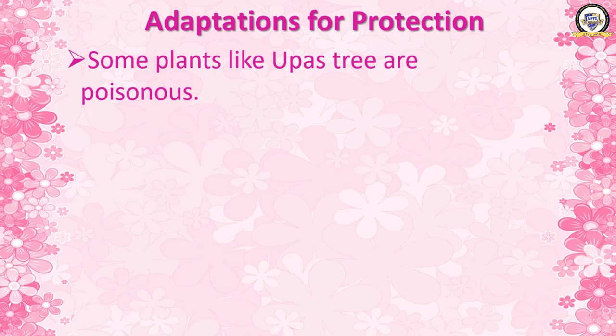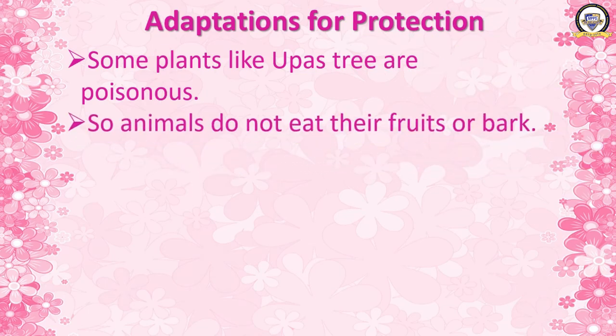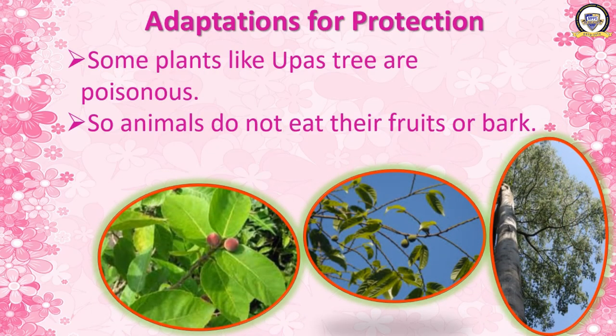Some plants like the upas tree are poisonous, so animals do not eat their fruits or bark. Nature has developed the tree to be poisonous and animals know it, so they will not disturb the tree. This is another way of adaptation for protection.